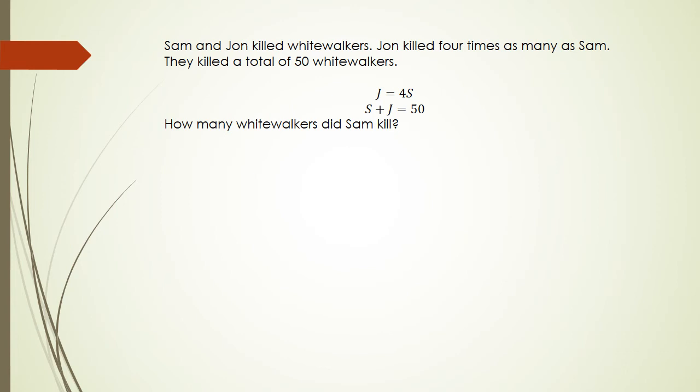Sam and John killed White Walkers. John killed four times as many as Sam. They killed a total of 50 White Walkers. So we've got that two equations set up. j equals 4s and s plus j equals 50. So how many White Walkers did Sam kill?